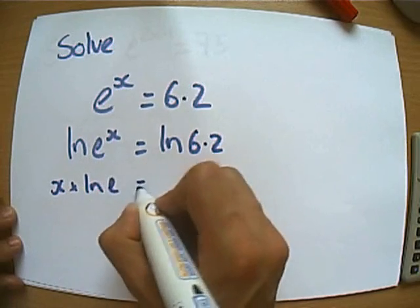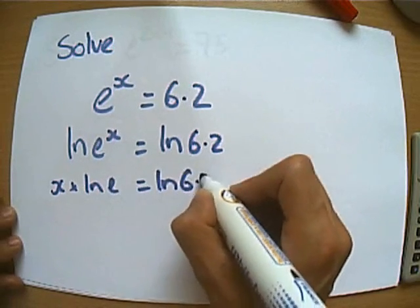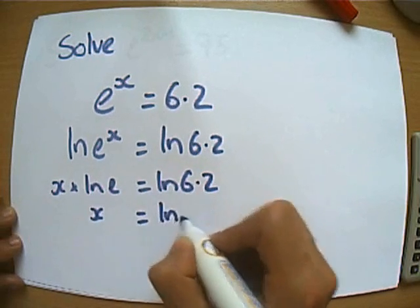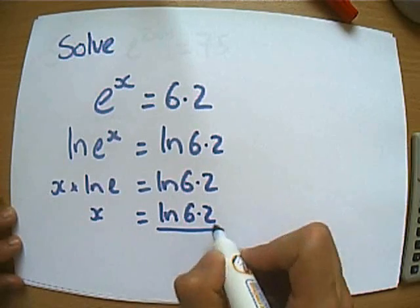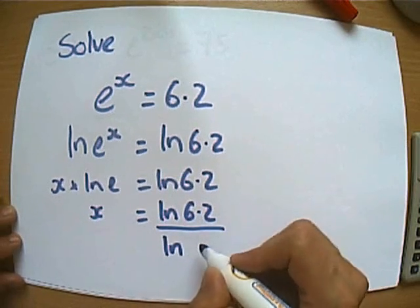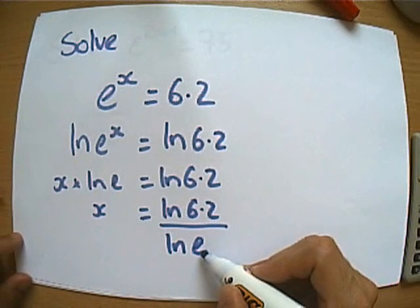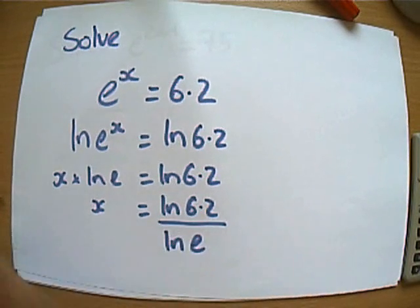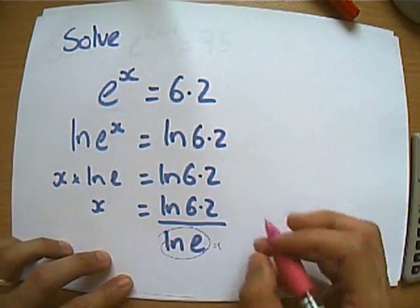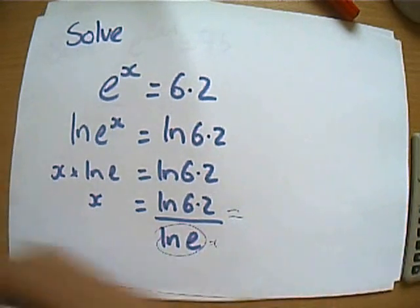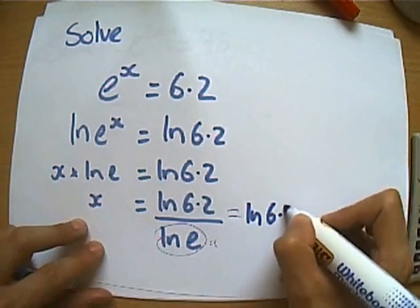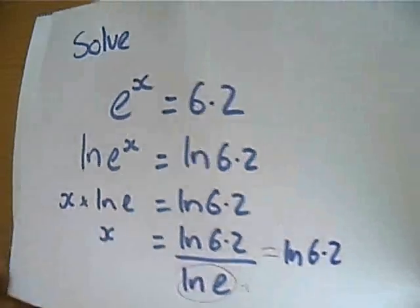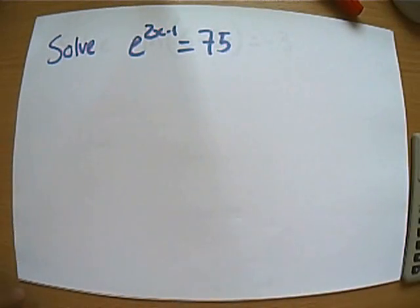So x times ln e equals ln of 6.2, and so let's now divide both sides by ln of e. And the smarty pants amongst you will already be going, hang on a minute, ln of e, what power did I raise e by to get e? That's just worth 1, isn't it? That evaluates to be 1.